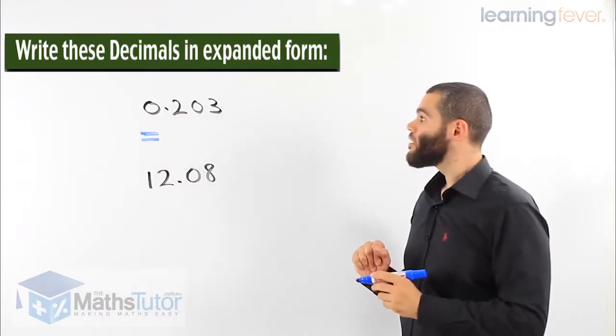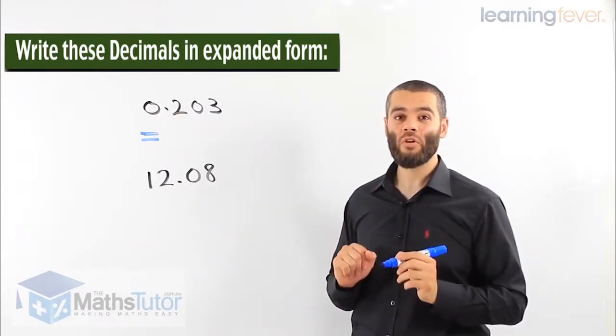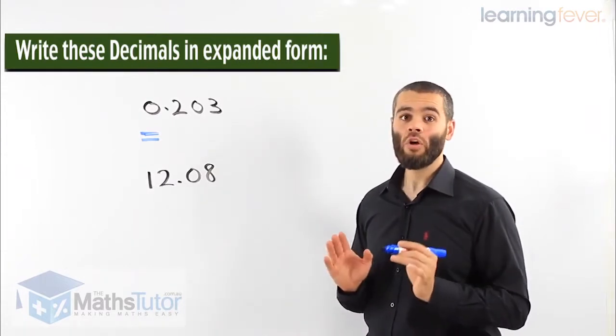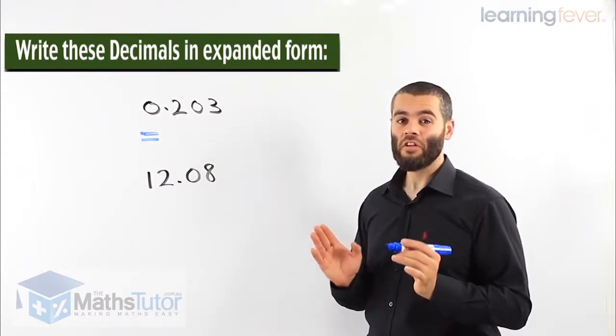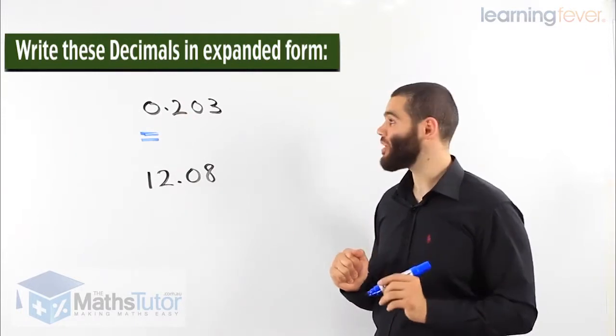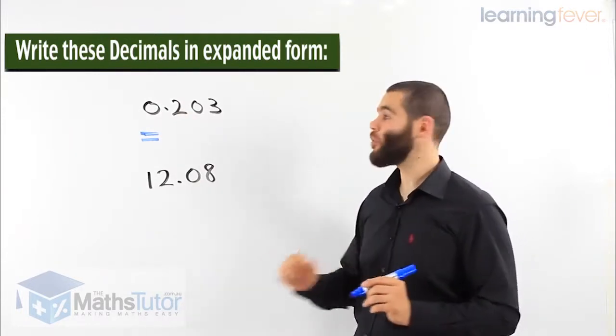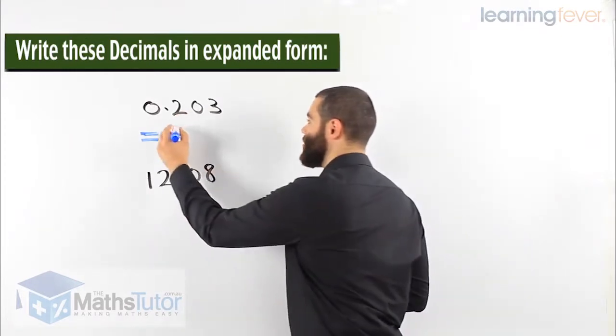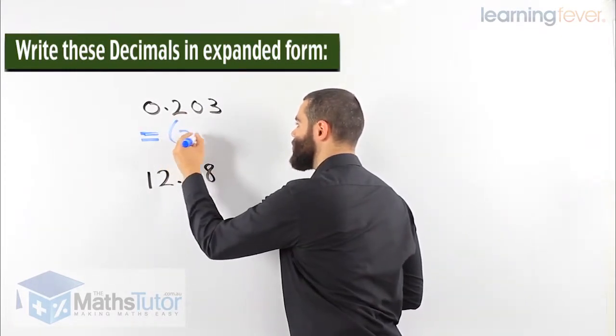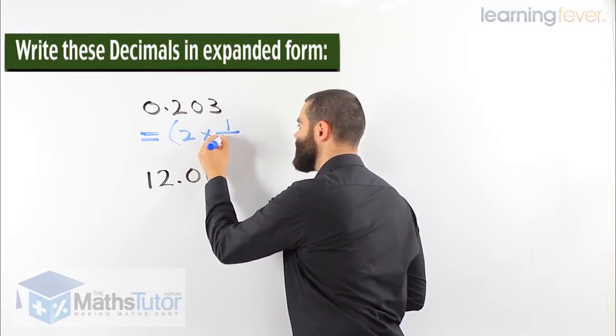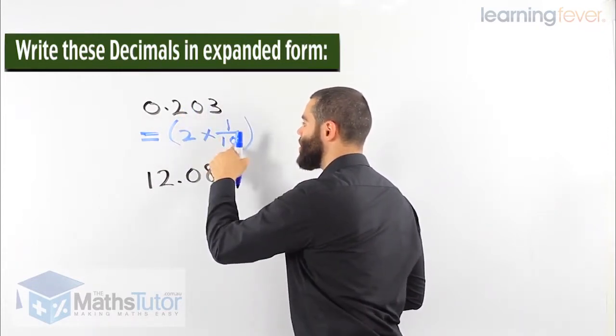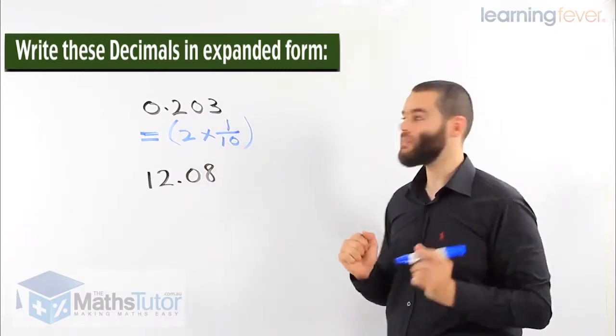0.203. Zero point meaning we have no whole numbers. So we move on to the numbers after the point. Our first number after the point is in the tenth column. And we notice it's a 2. So in expanded form, 2 times 1/10. Because it's the tenth. Because it's the first number. I put one zero. Another way to remember it.